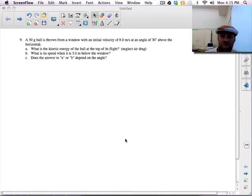Last I wanted to show you number nine on your work energy and power worksheet. It says a 50 kilogram ball is thrown from a window with an initial velocity of 8 meters per second at an angle of 30 degrees above the horizontal.